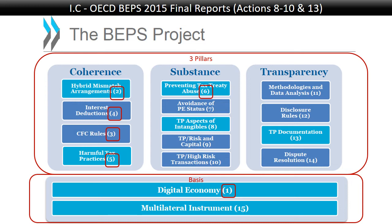The third pillar in BEPS was transparency. The first action — Action 11 — is not really important for taxpayers in the sense that it tells the OECD and governments how to analyze BEPS, how to try and quantify base erosion and profit shifting activities of taxpayers, so that we know how big the problem is that we deal with.